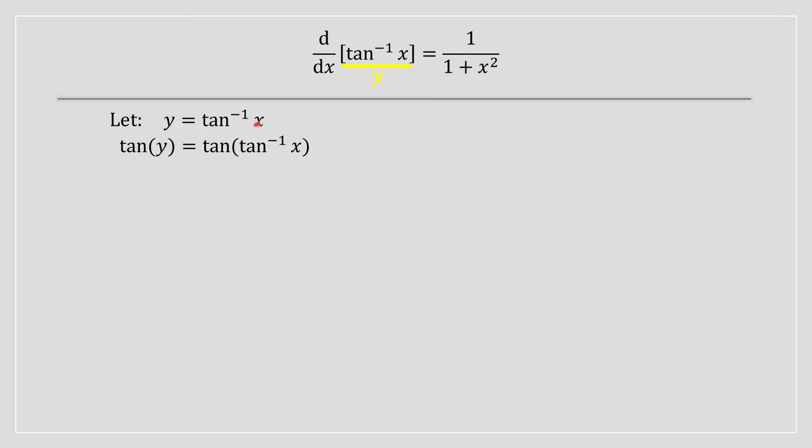Afterwards, you isolate the x term by applying tan to both sides of the equation. You're left with tan(y) equals x. At this point, you apply a derivative to both sides.